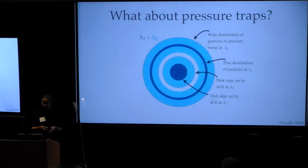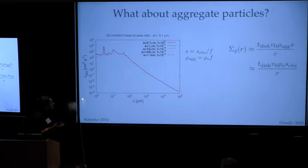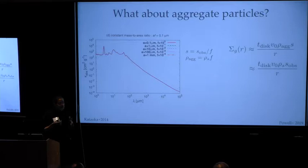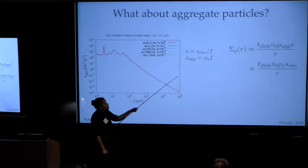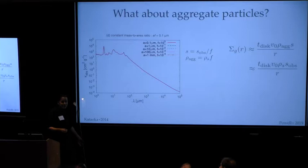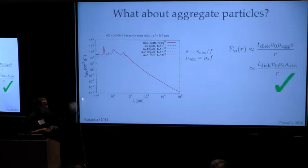So what if particles are actually aggregates? Here I'm showing a result from Kataoka et al. 2014, where I'm plotting the absorption opacity for different particles as a function of wavelength. They find that porous particles are typically characterized in terms of their optical constants by their mass-to-area ratio, or their particle size times their filling factor. Here I'm showing the absorption opacity for grains of different sizes, but with the same size times filling factor mass-to-area ratio. So what this means is that the true particle size is roughly the observed particle size divided by the filling factor. When we plug this into our equation for deriving surface density, we recover the same expression. So it's robust even if the particles are aggregates.